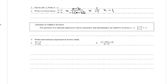This leads us to the quotient of additive inverses: the quotient of a rational expression whose numerator and denominator are additive inverses is negative 1. So A minus B over B minus A equals negative 1, as we saw.